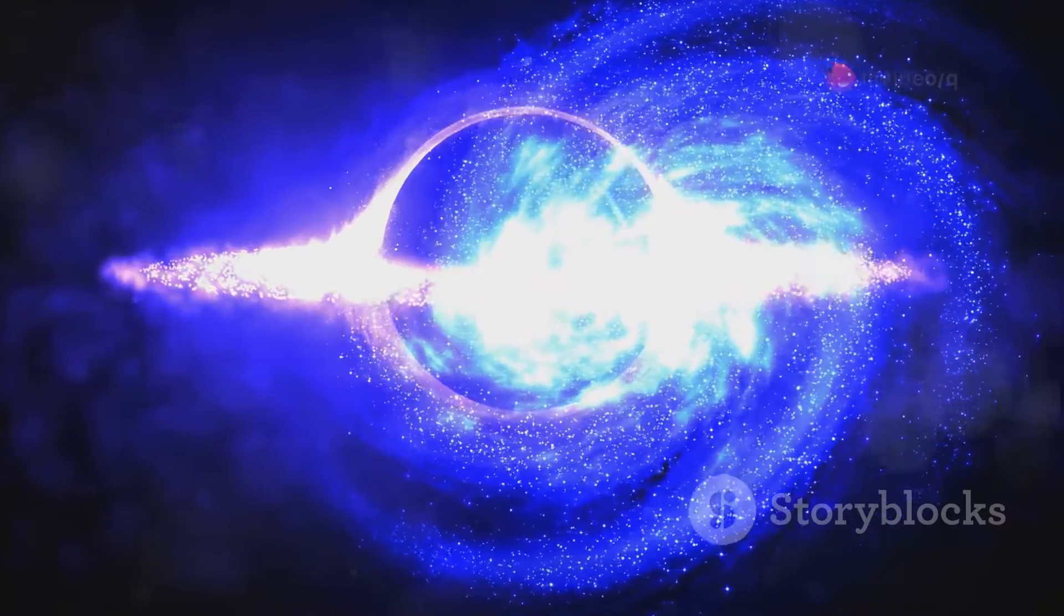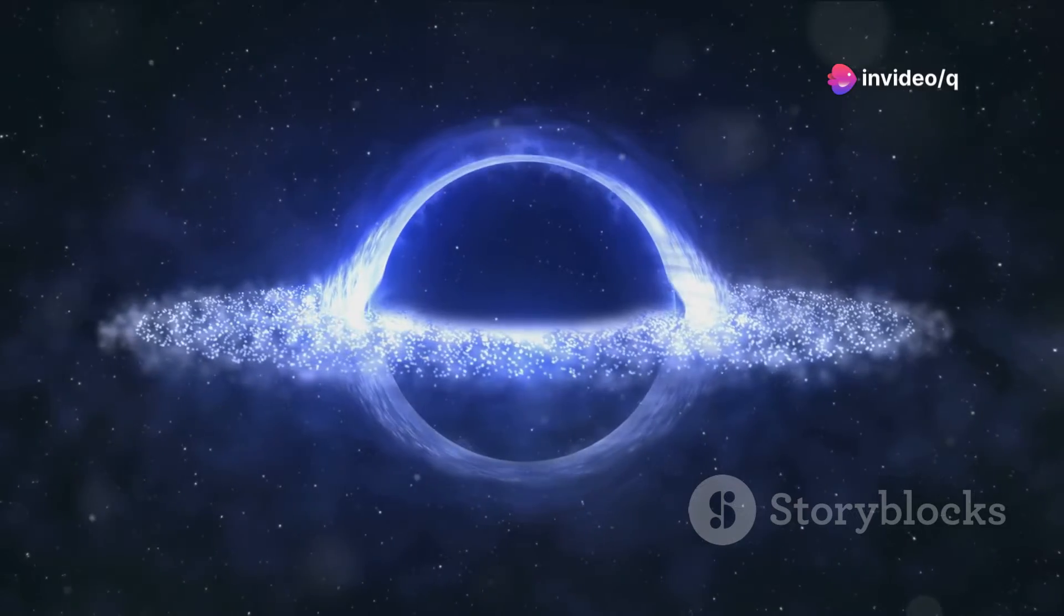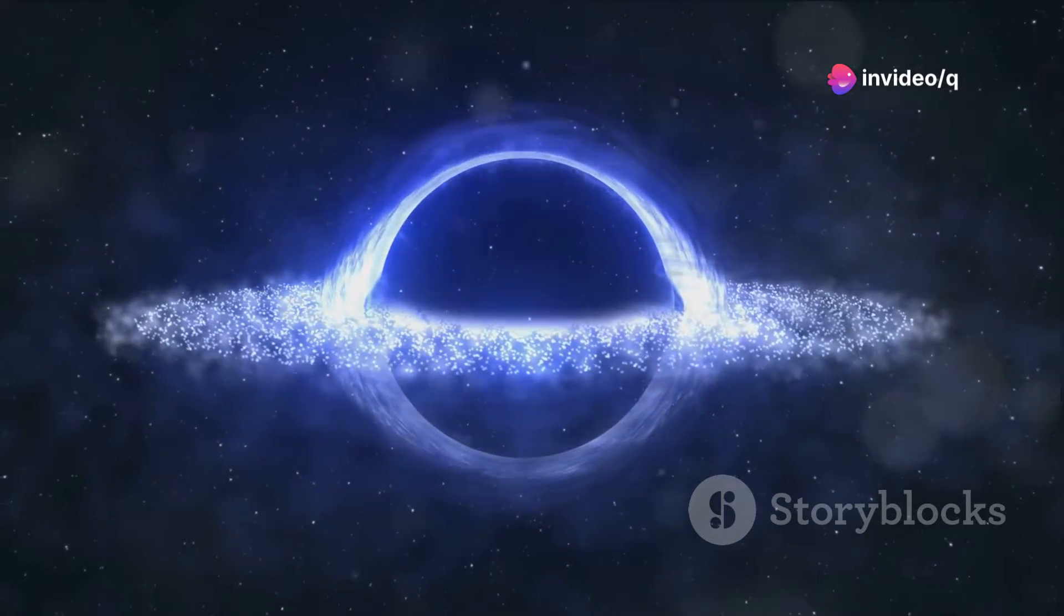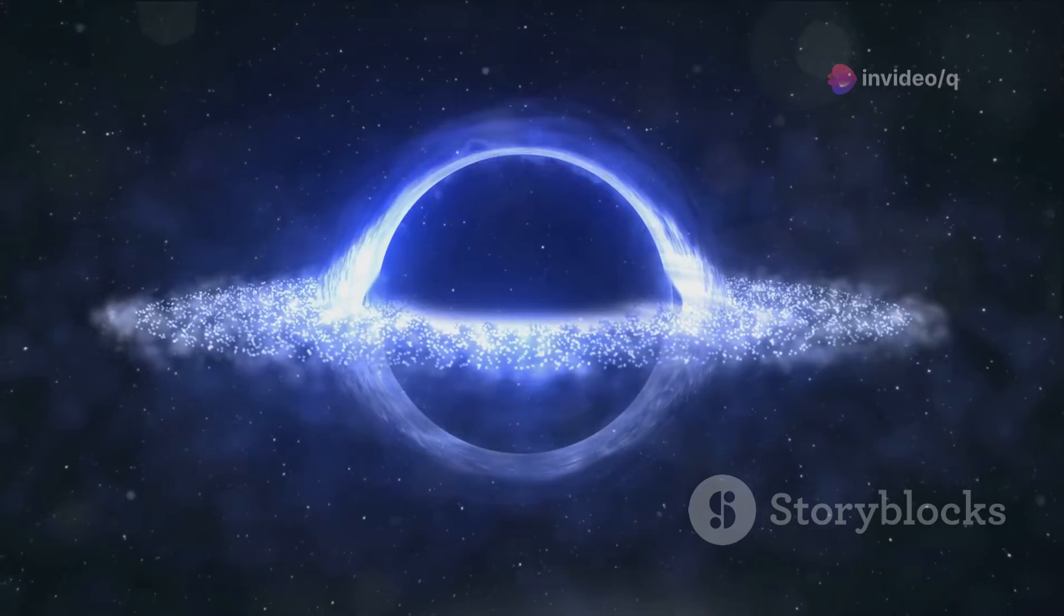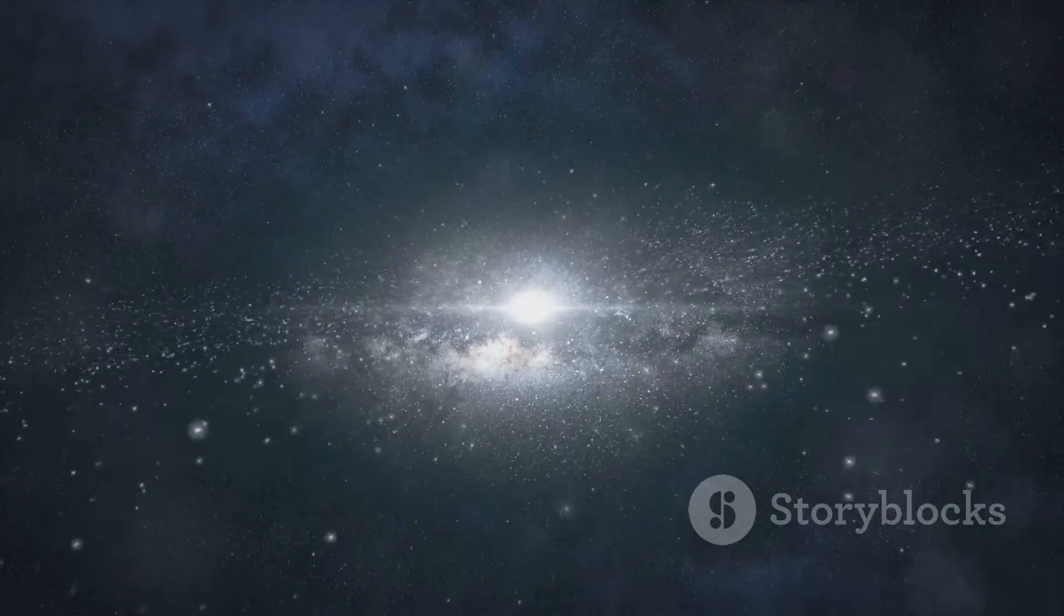Each cycle starts with a Big Bang, a moment of intense heat and density, and ends with a Big Crunch when the universe contracts back into a hot, dense state. This cycle then repeats, much like the seasons on Earth, each time giving birth to a new universe.